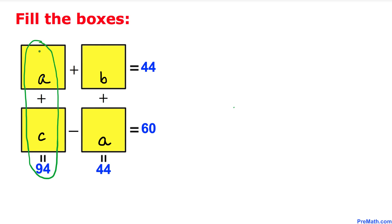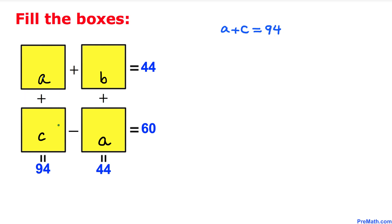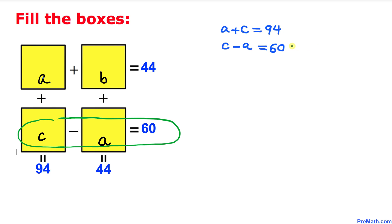A plus C equals 94. And for the horizontal boxes, C minus A equals 60.